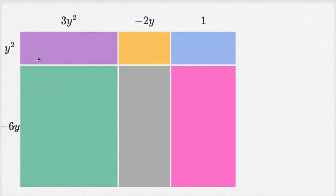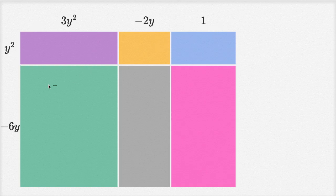What I want to do in this video is figure out multiple ways to express the area of this entire large rectangle, which we see is made up of these six smaller rectangles. There are a couple of ways that we can do it. One way is we can just multiply the height of this big rectangle times the width of this big rectangle.